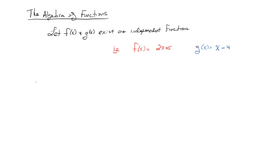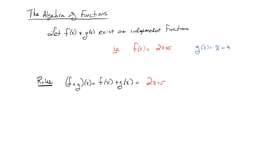Now we can talk about the four different rules. There's nothing very complex about these rules; it's just a formal way of combining two functions. First, the addition rule: (f + g) of x is equal to f of x plus g of x. Looking at our example, we add 2x plus 5 and x minus 4. Combining like terms: 2x plus x gives 3x, and 5 minus 4 gives positive 1, so (f + g)(x) equals 3x plus 1.